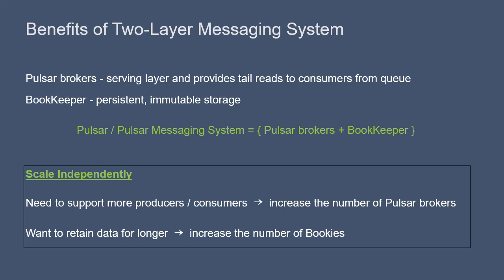By running the serving and storage layers separately, they can also be scaled independently. For instance, Bookkeeper is horizontally scalable, both in its capacity and its throughput. Bookkeeper capacity can be increased by the addition of more bookies to a cluster, and this change can be implemented immediately as needed.